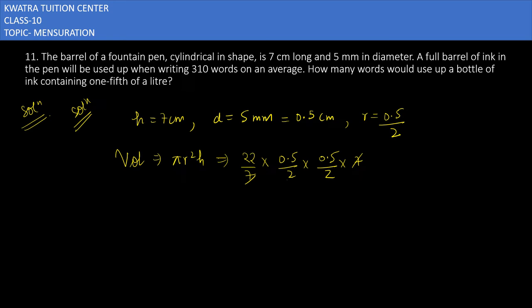7 and 7 can be cancelled. 22 can be cancelled to 11, and then you multiply and divide by 2, which gives you 1.375 cm³. Then they are saying the ink